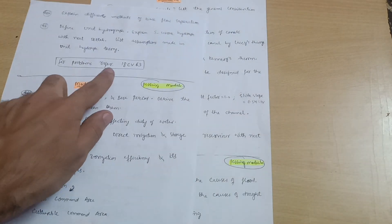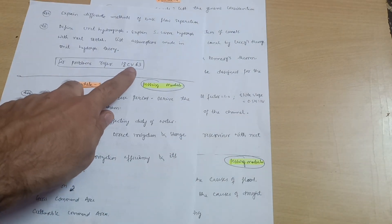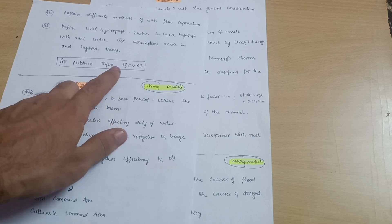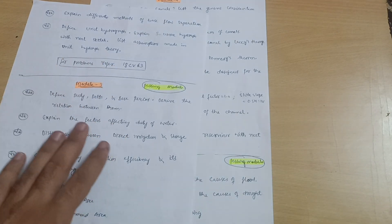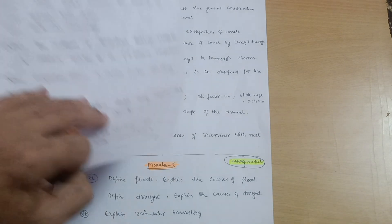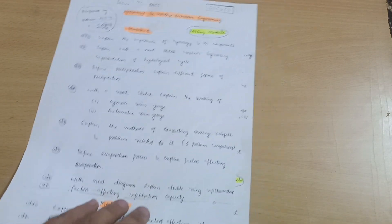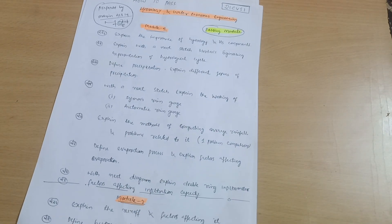As far as problems are concerned, you should refer the question paper 18 Civil 63 so that you can get the idea what type of questions they're asking. This is all about this passing package. I will provide the link in the description box where you can avail these important questions. Thank you.